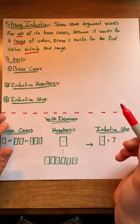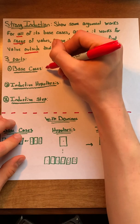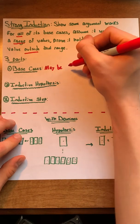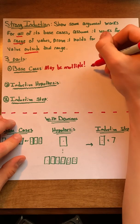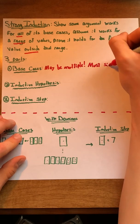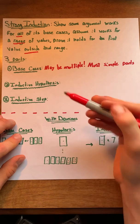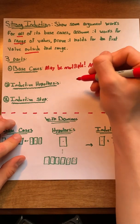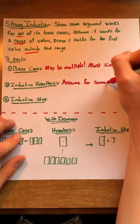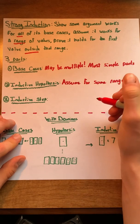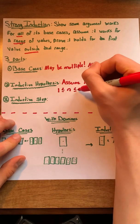We can further simplify this definition by breaking it into three parts. First, we have the base cases. Note that in strong induction there may be multiple base cases, whereas in weak induction there was only one. Just like in weak induction, these are the most simple parts. Next, we have the inductive hypothesis, where we make an assumption that the equation we're trying to prove holds for some range. A range will typically take on the form of something like 1 ≤ n ≤ k.